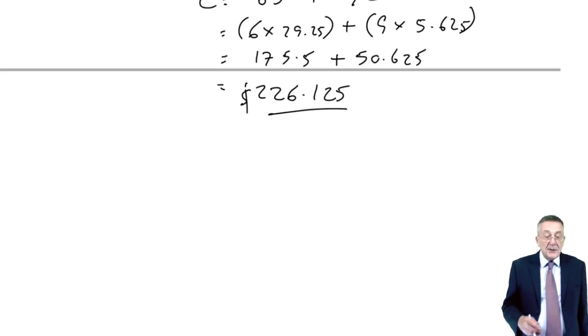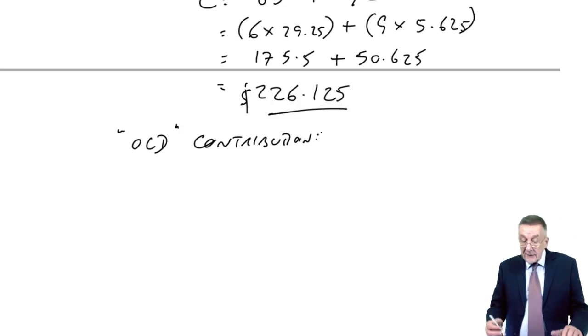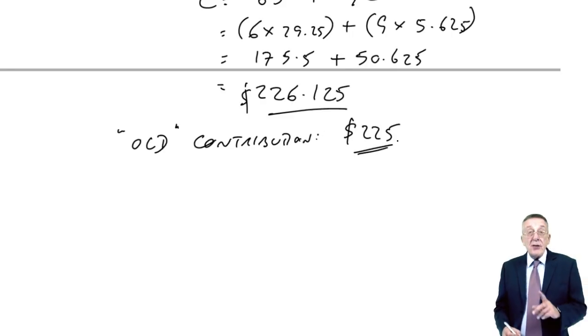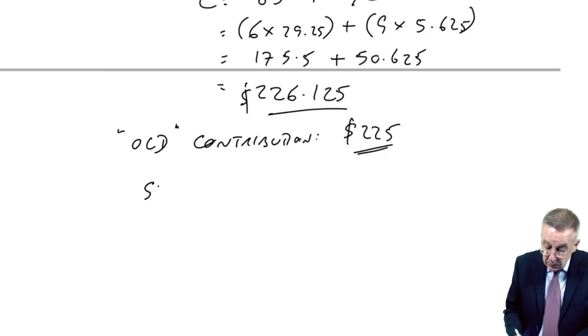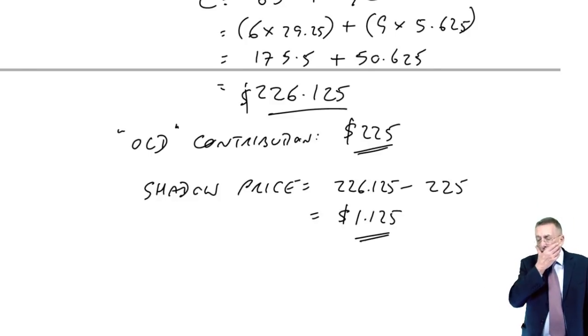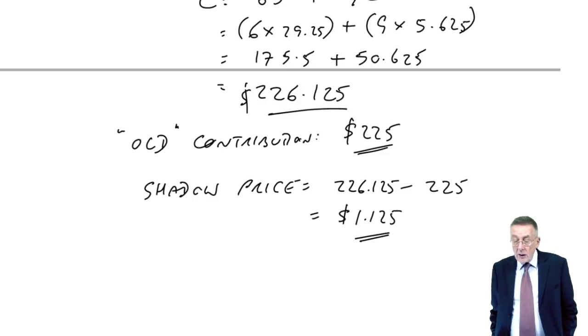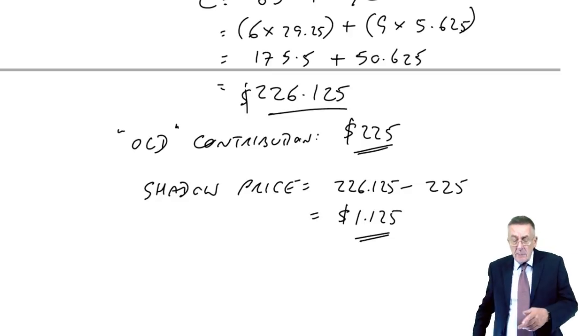Now that's if I have the extra kilo, if I have 81 kilos. What was it before when we only had 80? The old contribution. If you look back, I think it was 225 dollars. And therefore, having the one extra kilo increases the contribution by the difference. And that is the shadow price. So there's the arithmetic. But one final thing I must stress. Although the shadow price of the materials is $1.125, that doesn't mean that we're prepared to pay $1.125.